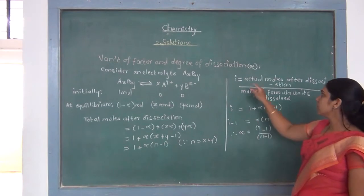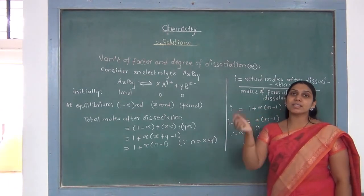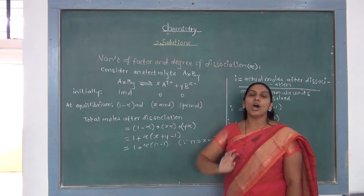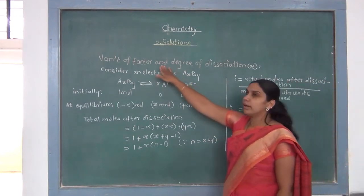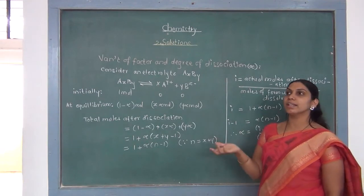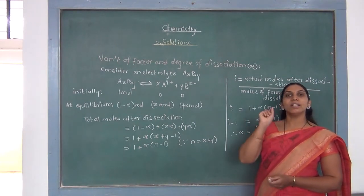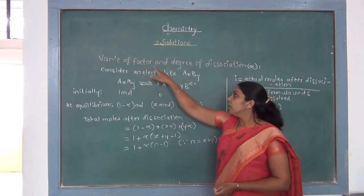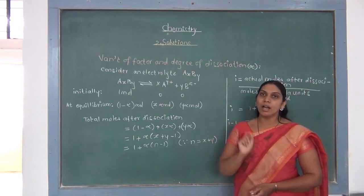The degree of dissociation alpha affects the Van't Hoff factor. We must study the relationship between the Van't Hoff factor I and degree of dissociation alpha so that while calculating the colligative properties of weak electrolytes, we can calculate them correctly.